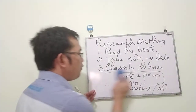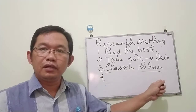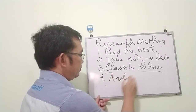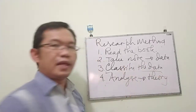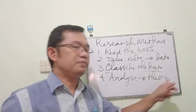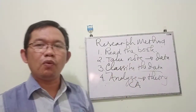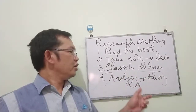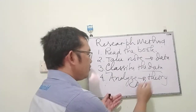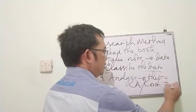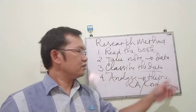After you have the classification of data, what you have to do is analyze the data. How do you analyze the data? You use the theory. For example, you use componential analysis, or you use contextual translation — you explain that your data will be analyzed using that theory.